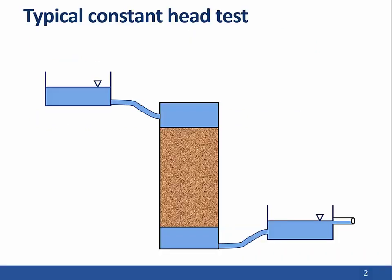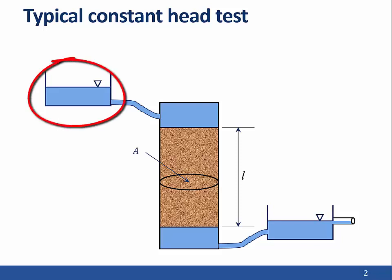This figure illustrates the key parts of any constant head permeameter. The test consists of a cylindrical specimen of soil with a cross-sectional area of A and a length of L. The top of the specimen is hydraulically connected to an upper reservoir, and the bottom of the specimen is hydraulically connected to a lower reservoir. The reservoirs are designed such that the elevation of water in each is constant.